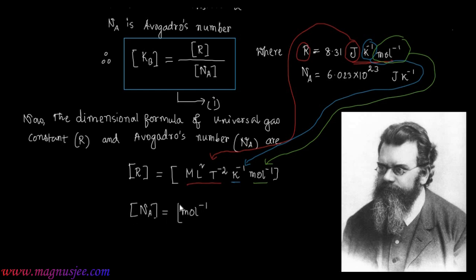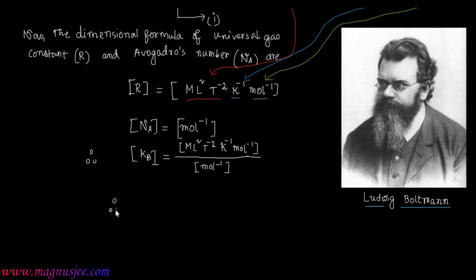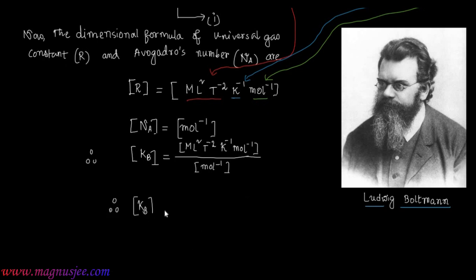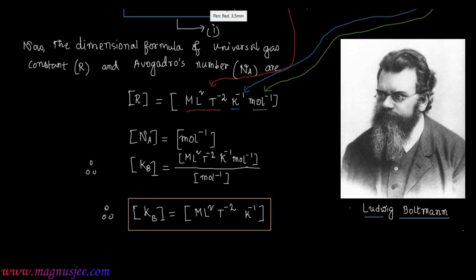Similarly, the dimension of Na is mol⁻¹ — the dimension of Avogadro's number is mole inverse. Therefore, the dimension of Kb equals ML²T⁻² Kelvin⁻¹ mol⁻¹ divided by mol⁻¹, which simplifies to ML²T⁻² Kelvin⁻¹.